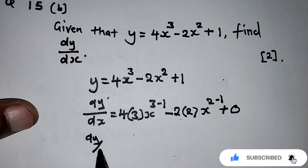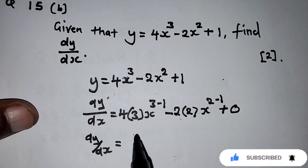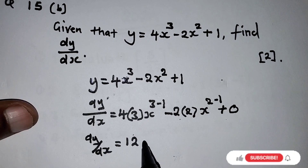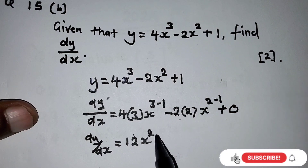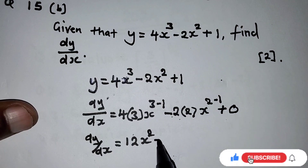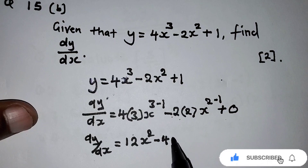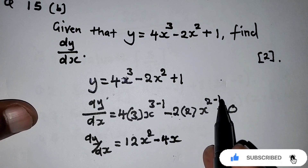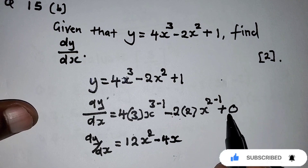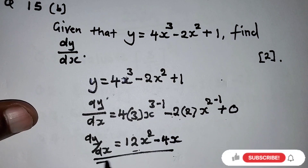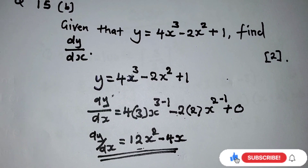So dy/dx equals 4 times 3, which is 12, and the power becomes 3 minus 1 equals 2. Then negative 2 times 2 is negative 4, and the power becomes 2 minus 1 equals 1, so it's just x. The constant term gives 0. Therefore dy/dx equals 12x² minus 4x.